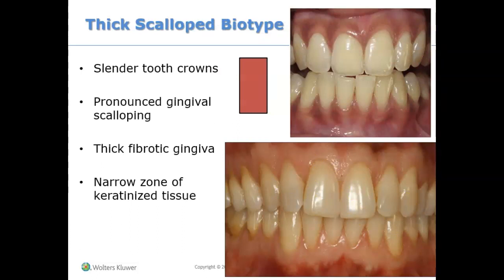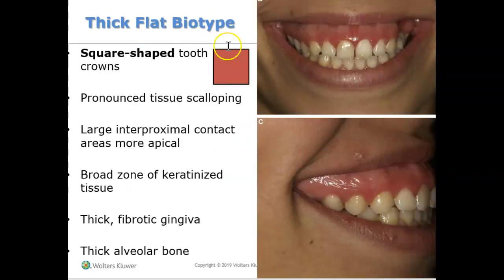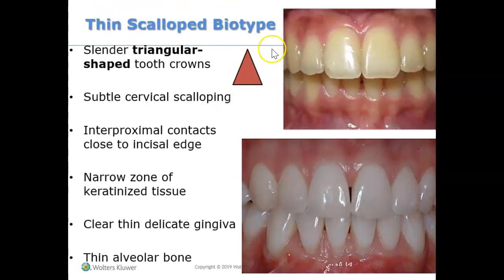So that's the periodontal biotype. If you're asked what type of biotype a patient has, look at the shape of the tooth: a slender tooth crown indicates thick scalloped biotype; a square-shaped tooth indicates thick flat biotype; and a triangular, slender tooth crown suggests a thin scallop biotype.